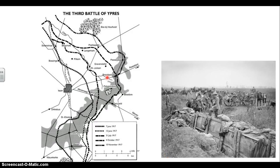One important thing about this flatland area around Ypres is that it used to be a swampland, reclaimed by the Belgians by building a drainage system under the soil. If you are constantly bombarding an area with artillery shells exploding and churning up the earth, you're going to destroy that drainage system. To make matters worse, in July 1917 there are very heavy thunderstorms and a lot of rain in the area. Very quickly the fields across this area are turning into mud.